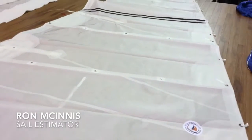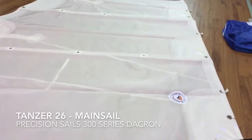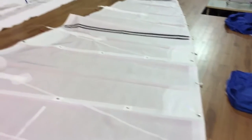Hey, good afternoon. Ron here with Precision Sail Loft, doing a new sail walkthrough for a really nice sail for a Tanzer 26. This is made from our 300 series Dacron.